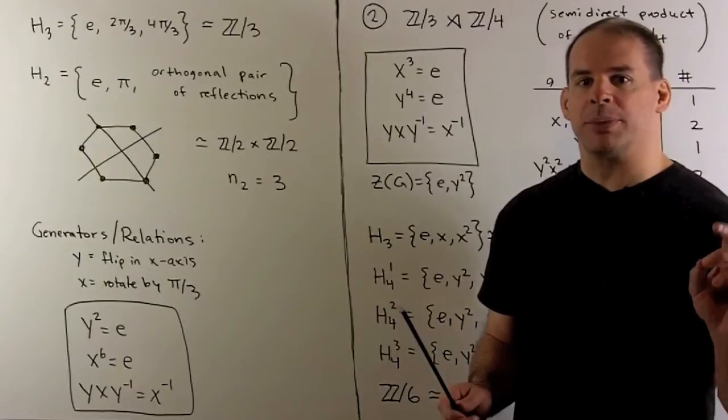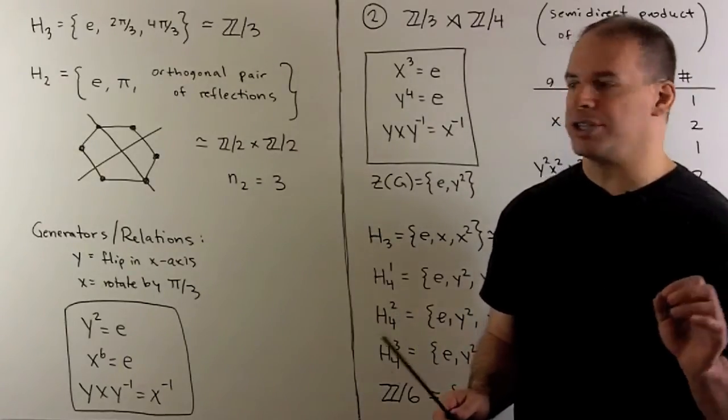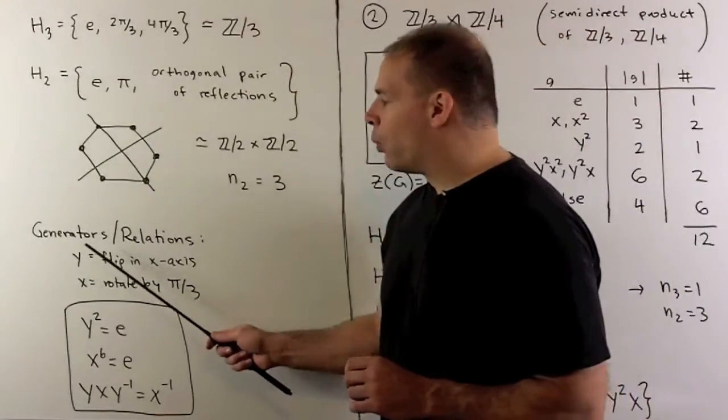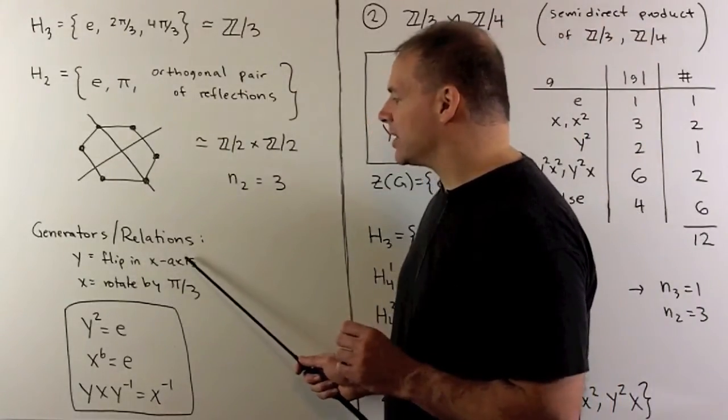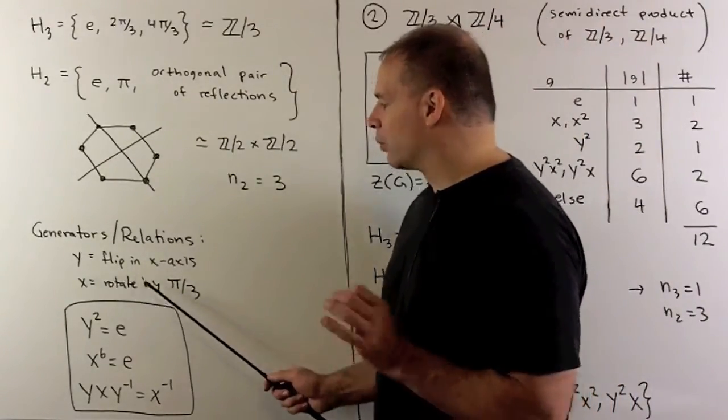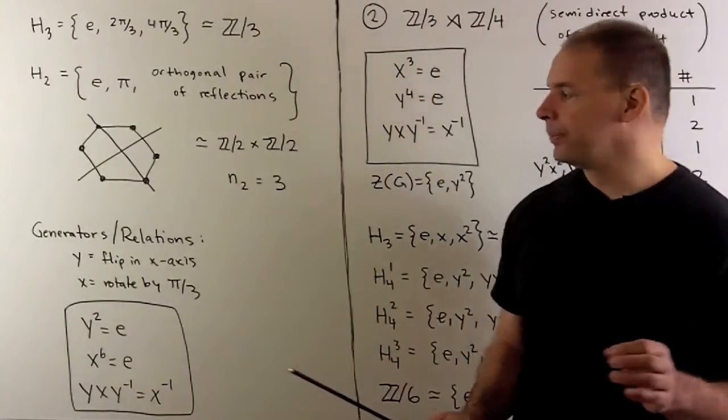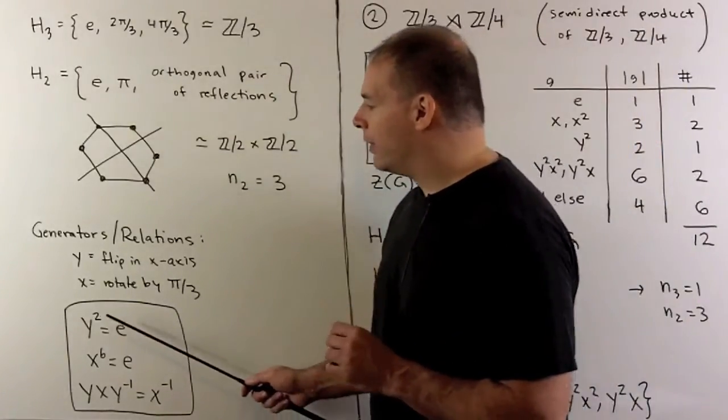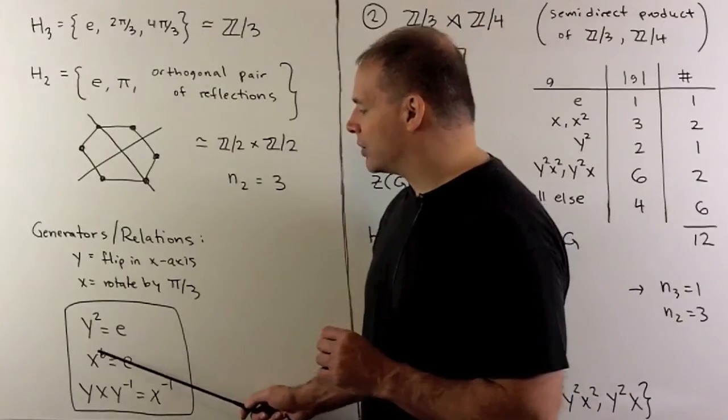To work with this in a little bit, it's going to be useful to have a description of D12 in terms of generators and relations. So if I let y equal the reflection in the x-axis, I let x be the rotation by pi over 3 counterclockwise. Then we'll have y's of order 2, x's of order 6,